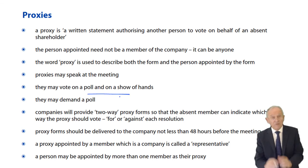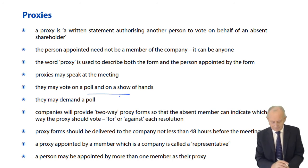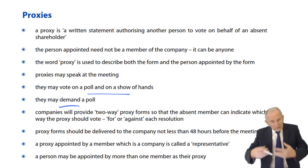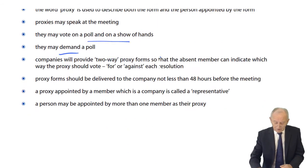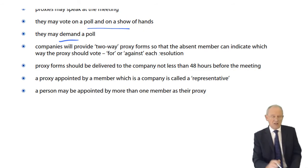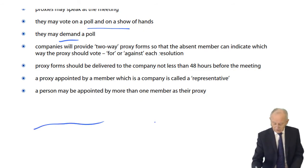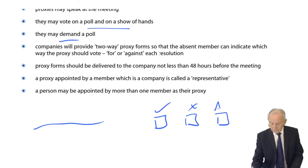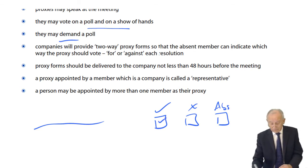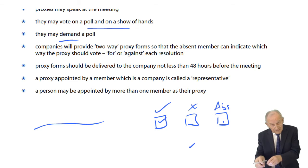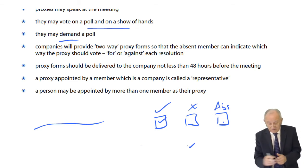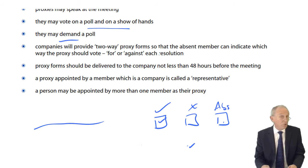Proxies can vote on a poll and on a show of hands, and may demand a poll or join with others to demand one. Companies will provide two-way proxy forms so that an absent member can indicate which way they want to vote — for, against, or abstain. If indicated, the proxy person must vote as directed. If the member doesn't indicate, the proxy person can vote whichever way they want.